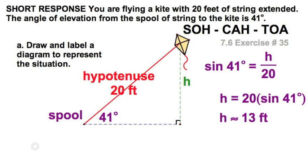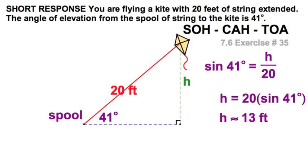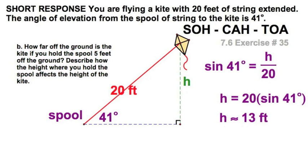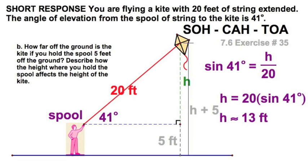Now let's add just a little bit more realism to our situation here. And part B. That spool. You're not holding it on the ground. You're going to be holding it in the air. So the drawing might look a little more like this. You're standing here. This is 5 feet in the air. This is the height we calculated. But this 5 is going to be additive. So the height of the kite relative to the surface of the earth is going to be h plus 5. Or, in other words, 18 feet.